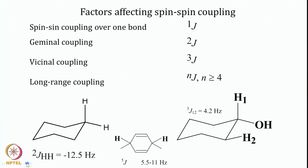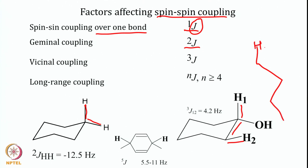What are the factors that influence spin-spin coupling or J coupling? The closeness of two spins dictates the strength of coupling because these spins are coupled through a bond containing electrons. Spin-spin coupling over one bond is denoted by superscript 1J. Geminal coupling is two-bond, vicinal coupling is three-bond, and long-range coupling is more than four bonds. As the distance increases the strength of the coupling decreases because this is through-bond coupling.